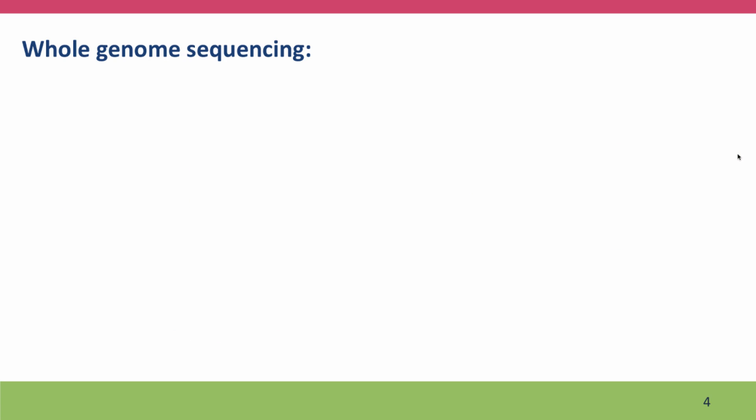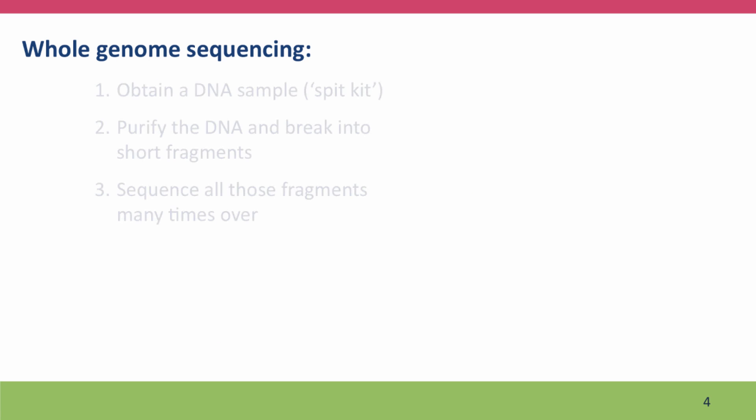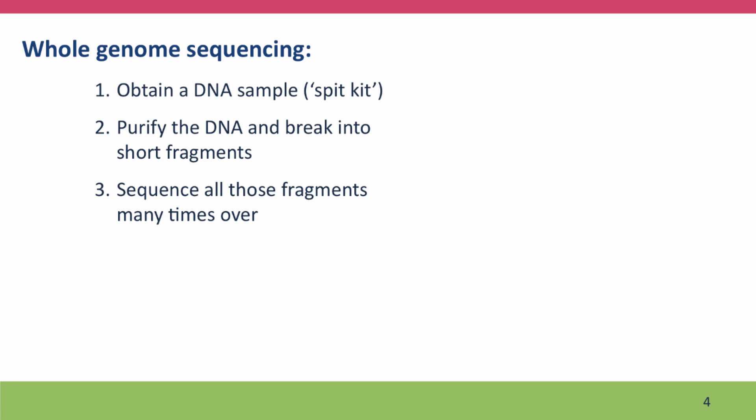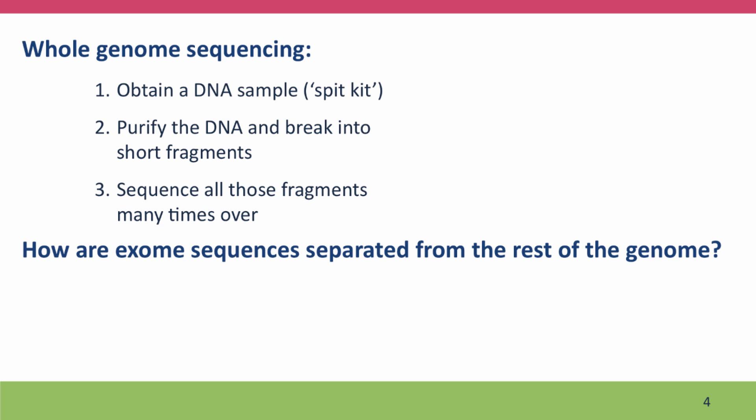How this is done is fairly simple. Whole genome sequencing is done by obtaining a DNA sample — in direct-to-consumer sequencing, this would be a spit kit like that used for SNP typing. The DNA is purified and broken into short fragments, often amplified, and then the fragments are sequenced many times over. If the goal is to just sequence the exome — just the coding sequences — you need to separate those from all the rest of the DNA, the 98% of the genome that you don't want to sequence.